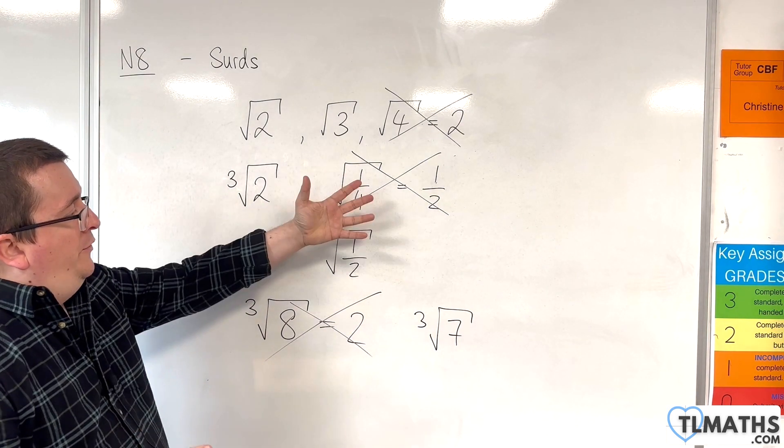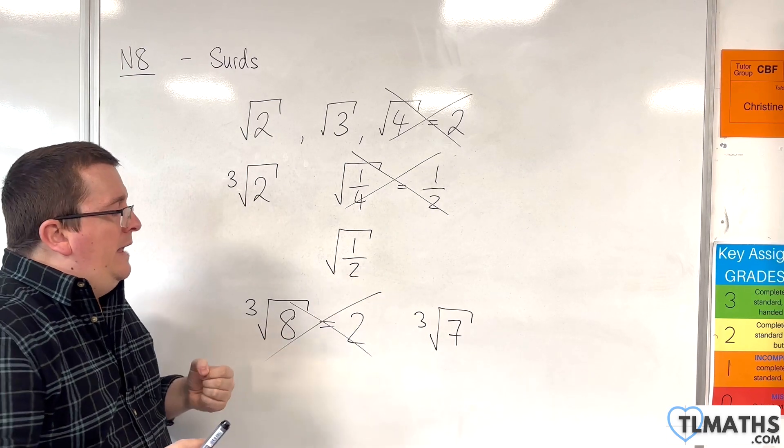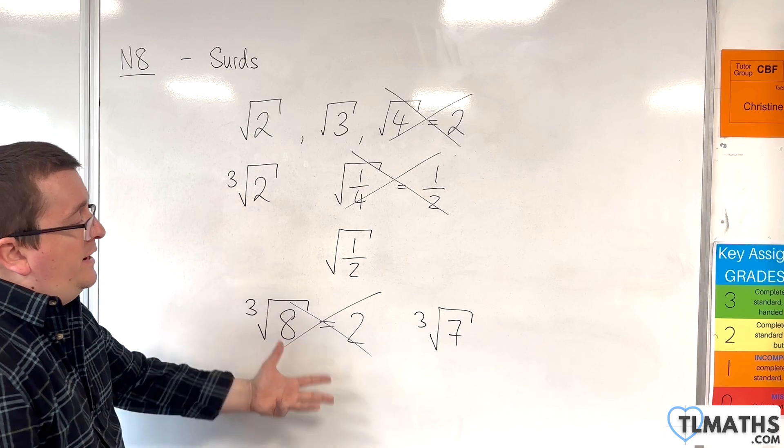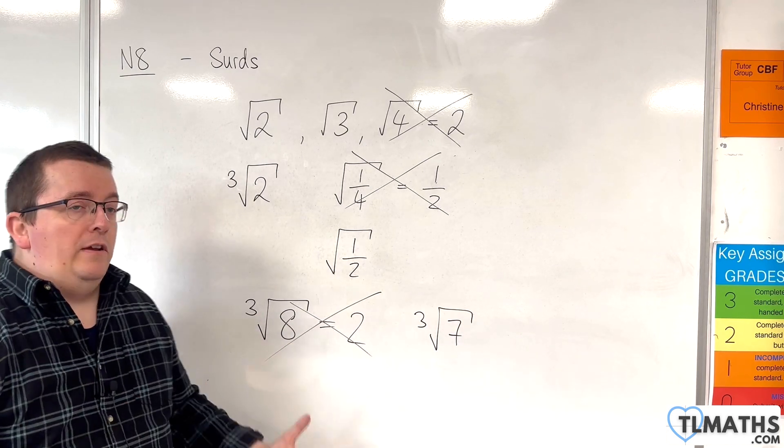So when you're square rooting you're looking for square numbers. If you're cube rooting you're looking for cube numbers, and so on. That's how we can identify whether a number is a third or not.